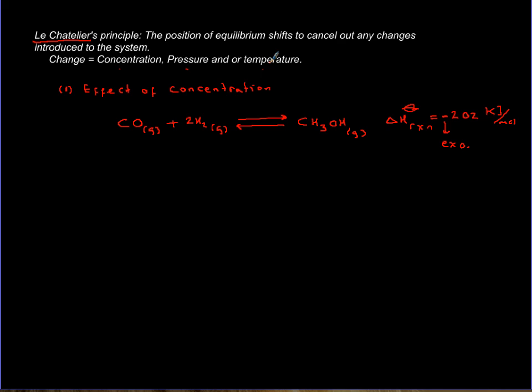Concentration is easy. If you increase the concentration of one species, you will shift to the other side. So if the concentration of carbon monoxide increases — the bracket stands for concentration — the system has no choice but to shift toward the product.